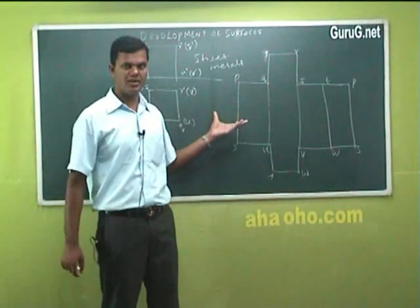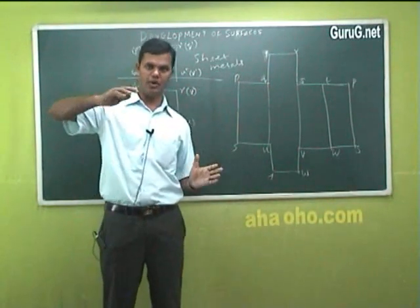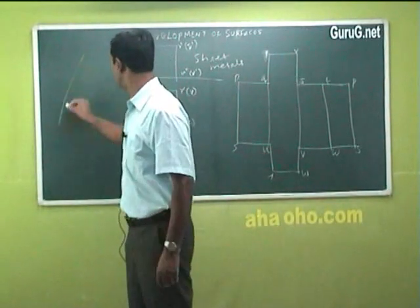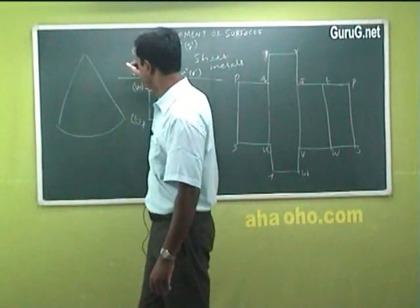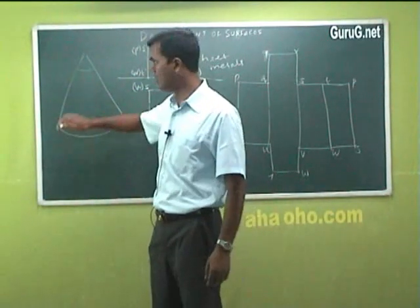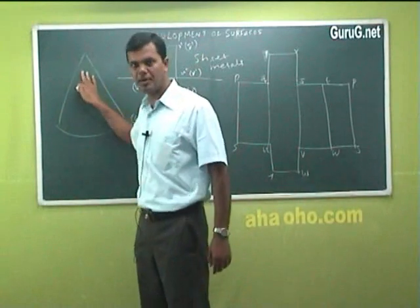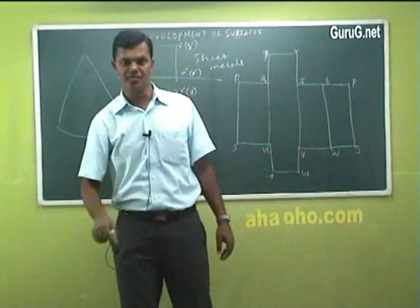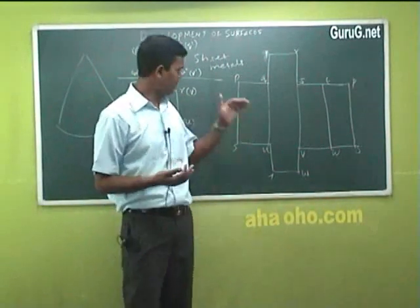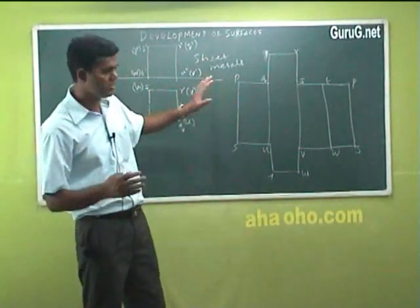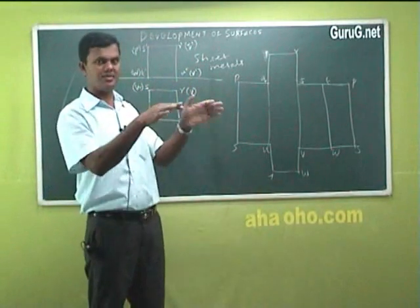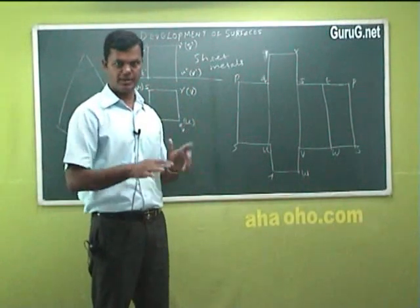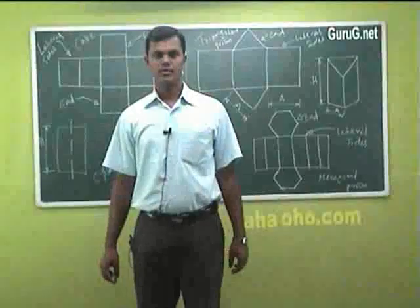There are one or two formulas when you go for a cone. How to develop a cone? You need to know the angle — say, for example, a cone is like this. You should know what this angle is; it will be given. You need to remember one or two small formulas so that you substitute the values and develop it.